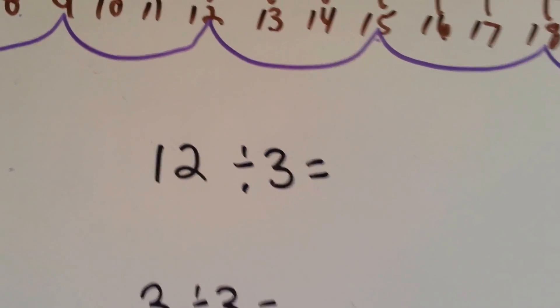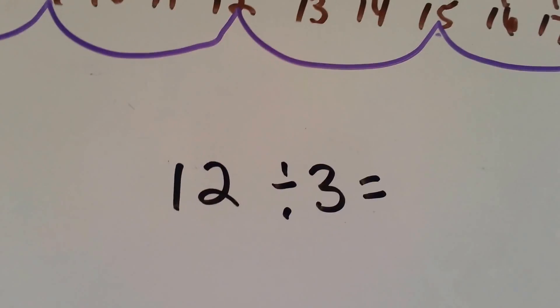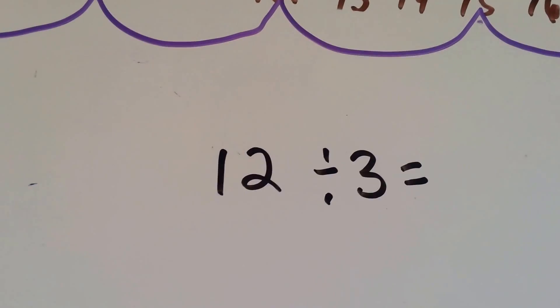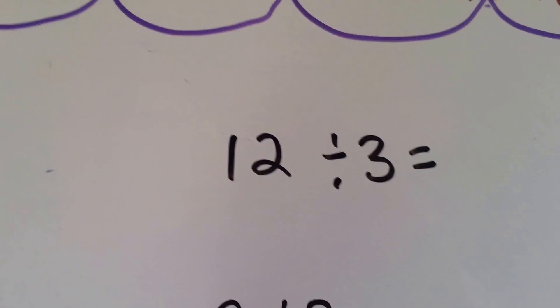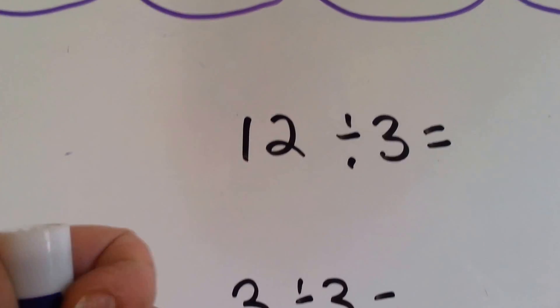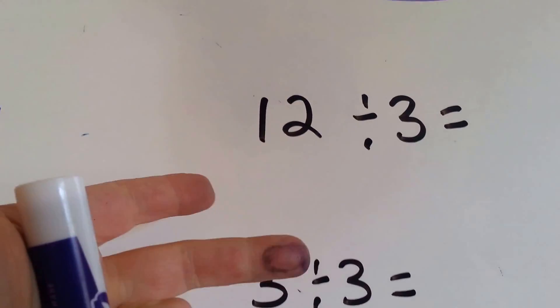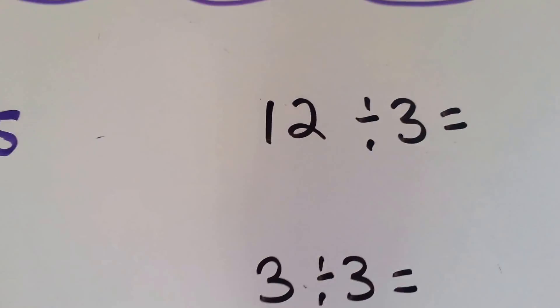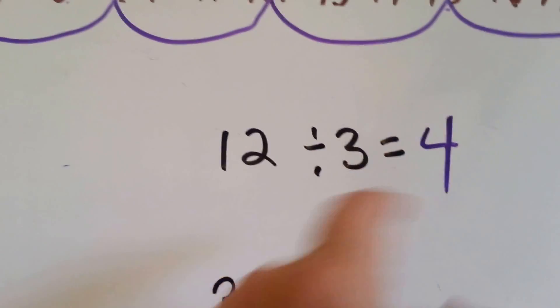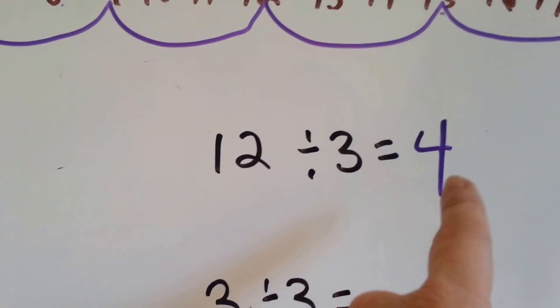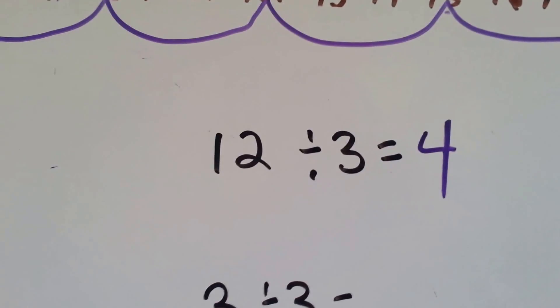12 divided by 3. How many times can 3 fit into 12? Let's count on our fingers: 3, 6, 9, 12. Four. 12 divided by 3 is 4.